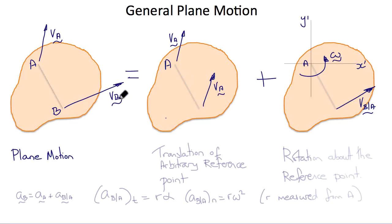So we've said that a plane motion can be represented as the sum of the translation of an arbitrary reference point, in this case A, and a rotation about that reference point.